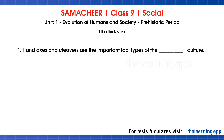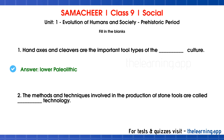Fill in the blanks. First question: hand axes and cleavers are the important tool types of the dash culture. The correct answer is Lower Paleolithic culture. Paleolithic has three stages: lower, middle, and upper. Second question: the methods and techniques involved in the production of stone tools are called dash technology. The correct answer is Lithic technology — 'lith' means stone.